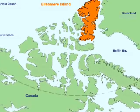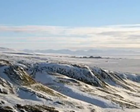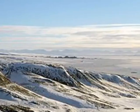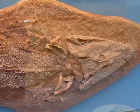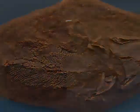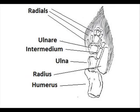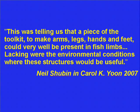In 2004, Neil Shubin and his team went to Canada's Ellesmere Island, about 600 miles from the North Pole. Shubin knew that was one of the few places on Earth where beds of rock 350 million years old were exposed. He was fossil hunting, and his efforts were rewarded by a truly remarkable find: Tiktaalik roseae, a 375 million year old fossil land-exploring fish. It had a startling feature — wrists. Wrists were thought to be confined to fully land-based animals, because fish do not need them. Shubin explains: this was telling us that a piece of the toolkit to make arms, legs, hands, and feet could very well be present in fish limbs.